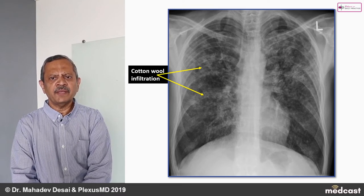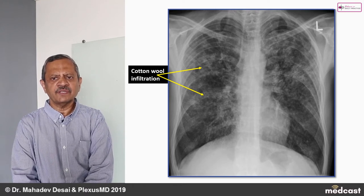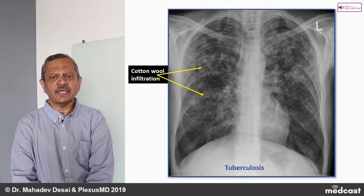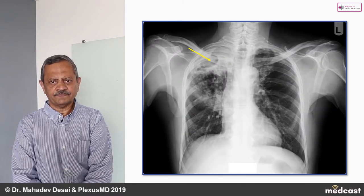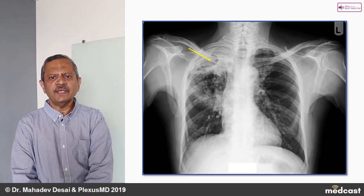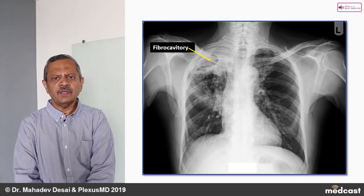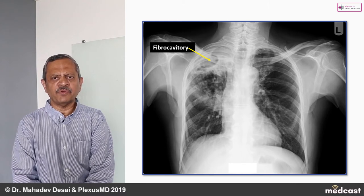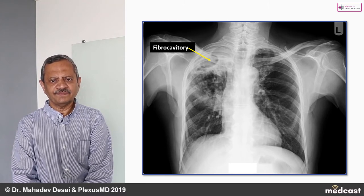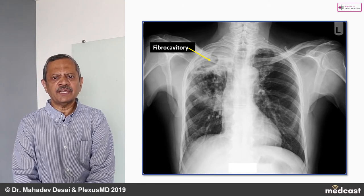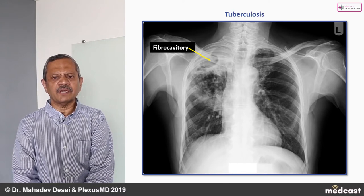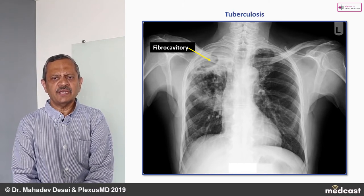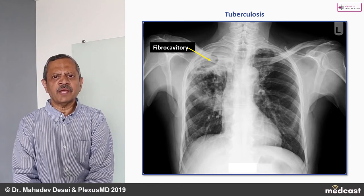This X-ray shows many cotton-wool type or fluffy opacities in both sides of the lung with the rest of the lungs appearing normal — this is a case of active pulmonary tuberculosis in all probability. The next X-ray shows cotton-wool opacity elsewhere, but at the right apex around the clavicle region, there is a rounded fibrocavitary lesion. The right apex ribs are crowded, suggesting a chronic lesion — this is fibrocavitary pulmonary tuberculosis, possibly with an active infection.